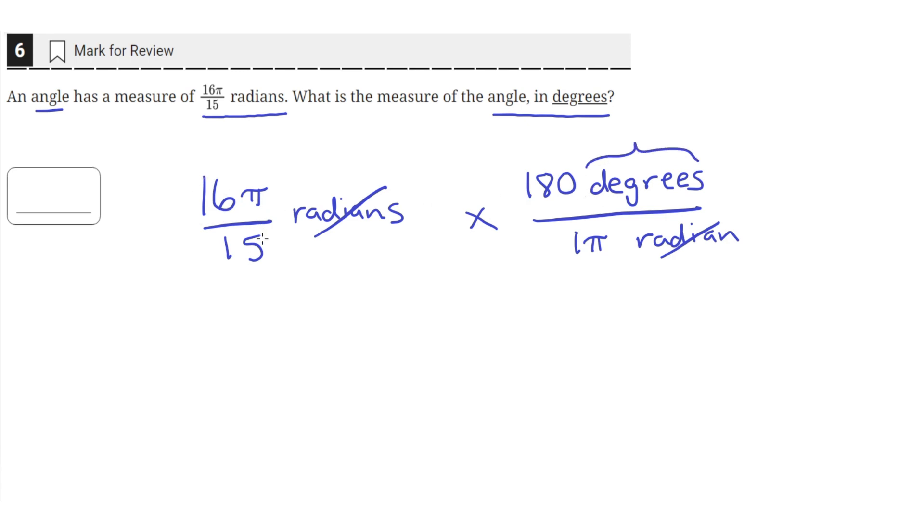So we just simply need to multiply the angle in radians by the quantity that 180 degrees are in one pi radian. So when we multiply these two together, the radians will cancel out and we will be left with 192 degrees.